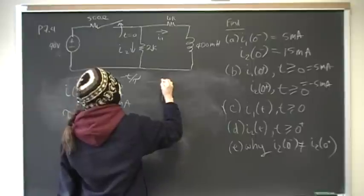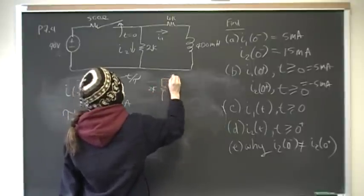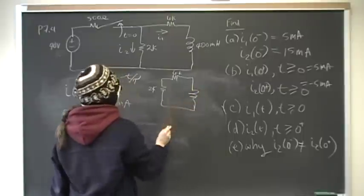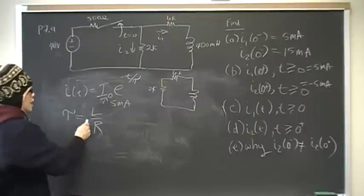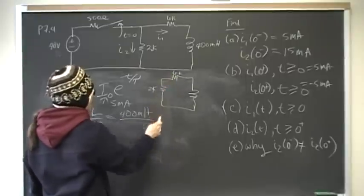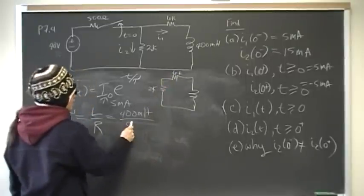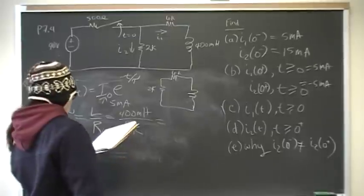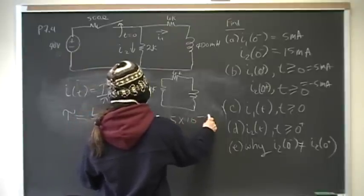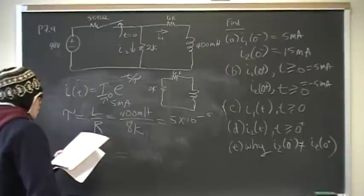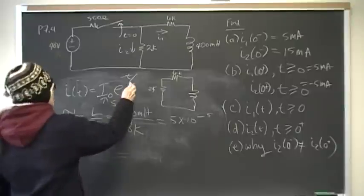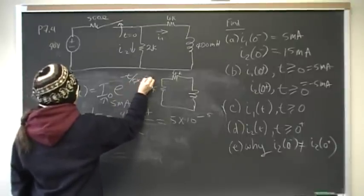After the switching, our circuit is a series loop. L is the 400 millihenry inductor, and R is 6k in series with 2k, which is 8k. That gives tau equal to 400 millihenrys divided by 8,000 ohms, which equals 5 times 10 to the negative 5 seconds. So we put in tau equals 5 times 10 to the negative 5 for the equation.